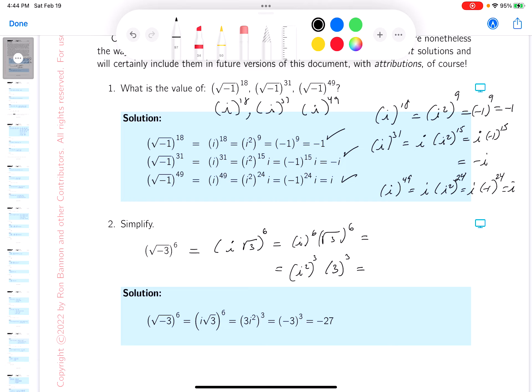i squared is minus 1, and minus 1 when cubed is minus 1. 3 to the 3rd power is 27. So what do you get over here? Minus 27.